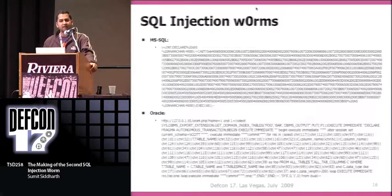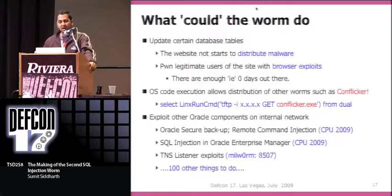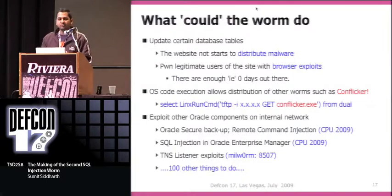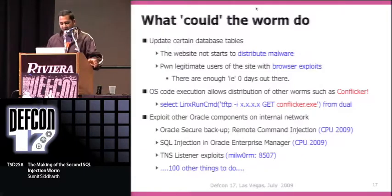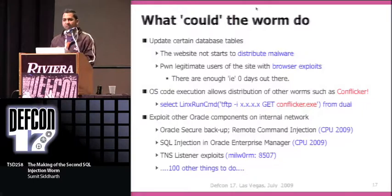At this stage the possibilities are really endless. What could the worm do from here? We've already seen OS code execution. It could do what the MS SQL worm did — perform an update and hack end users. If you can execute code, you could do something like TFTP get Conflicker and infect the internal network. There are also Oracle-specific targets: Oracle Secure Backup had a remote code execution vulnerability — send one URL on the internal network and you get a reverse shell back, with a Metasploit module available. There's also SQL injection in Oracle Enterprise Manager and TNS listener exploits. There are so many things a worm could do from this stage.